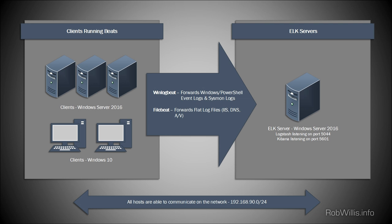For those not familiar with the Elastic setup, here's a basic overview of the architecture. All hosts are on a single flat network in the same subnet so they can all communicate. On the left-hand side we have clients running beats agents — Windows Server 2016, Windows 10, various endpoints — and on the right-hand side we have our ELK server running Windows Server 2016. The beats agents forward events from the client servers into the Elastic stack. In this case I'll be using WinLogBeat, which forwards Windows events, PowerShell events, and Sysmon logs, since they all end up in the Windows Event Viewer.